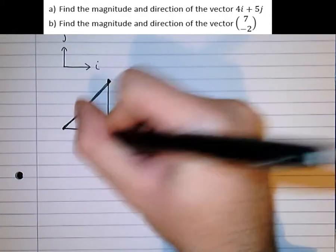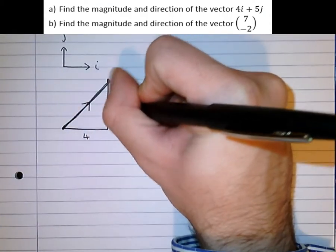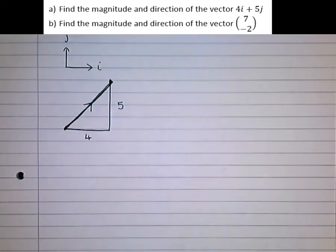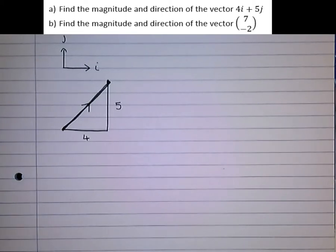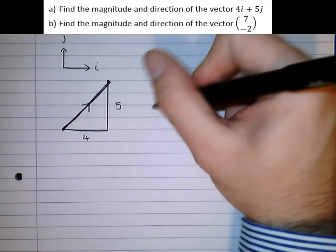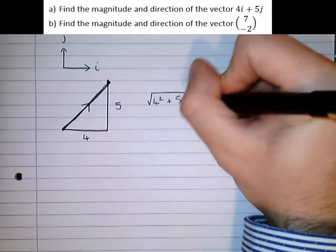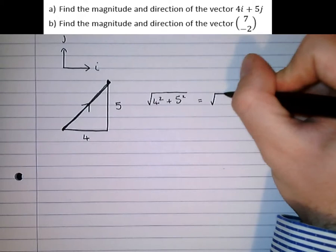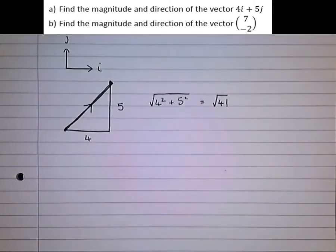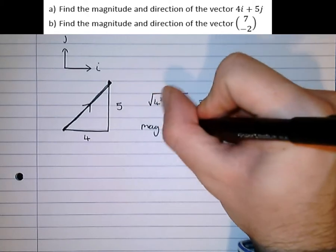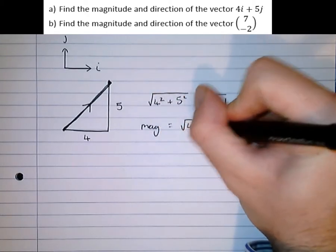We move 4 in that direction, and 5 in that direction. The magnitude is the length of the resultant, and hopefully you realize we can find this using Pythagoras. The magnitude or length of the resultant is root of 4 squared plus 5 squared, which is root of 41. So the magnitude is equal to root of 41.